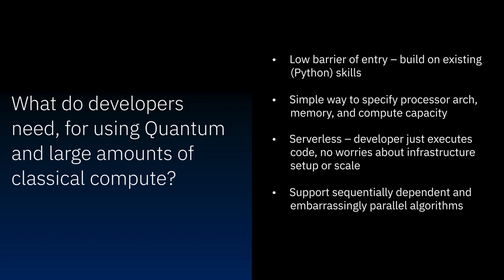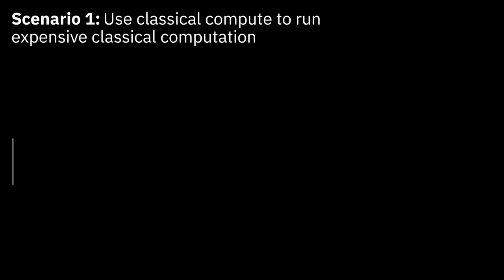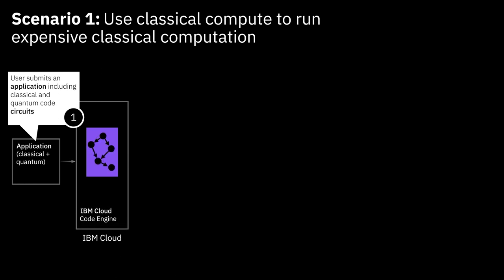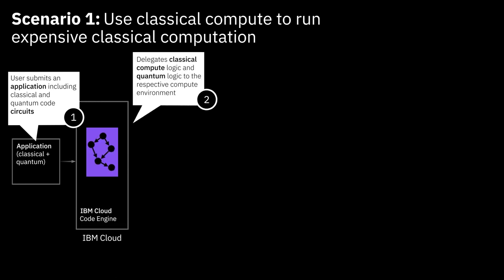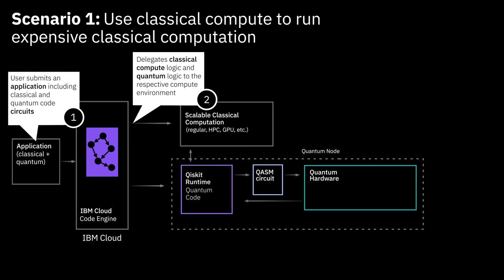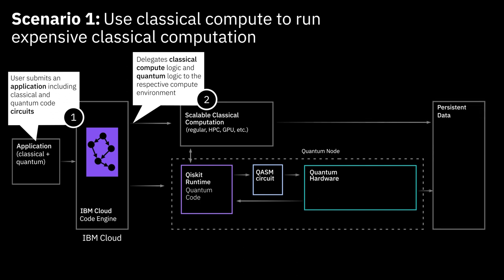I want to talk about two scenarios where this is really relevant. Scenario one is about using classical compute to run expensive classical computation — for example, very compute-intensive or data-intensive pre-processing of data, which is then used in a second step for running the quantum logic. The way we set things up, the developer can represent this in one application with both quantum and classical parts, and Code Engine will take care of delegating the classical part to the classical cluster and the quantum part to the quantum cluster, and establishing a connection between the two when data needs to be handed over.